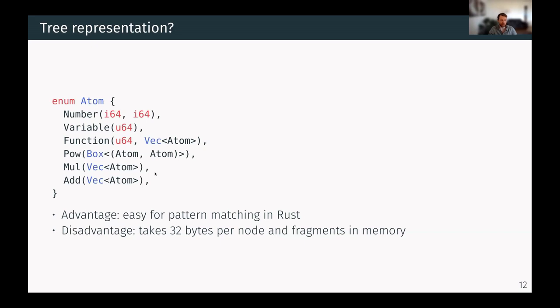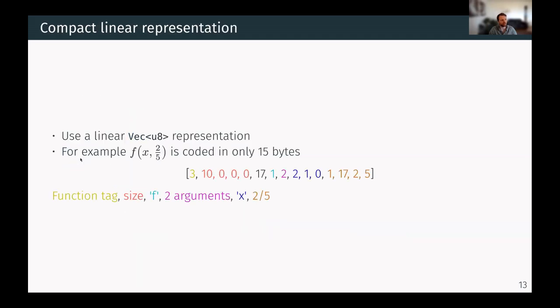Now, this is very nice for pattern matching in Rust. But the downside is that this thing takes up 32 bytes of memory per atom. And it's also completely fragmented. So instead, Symbolica uses a linear representation of the expression.